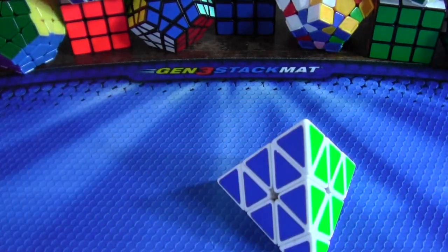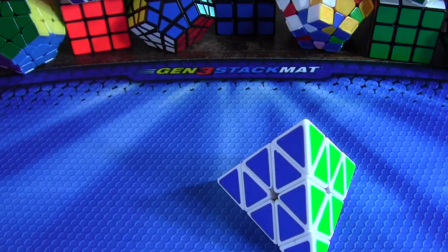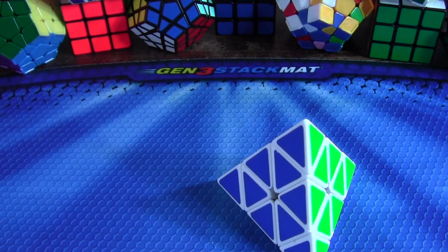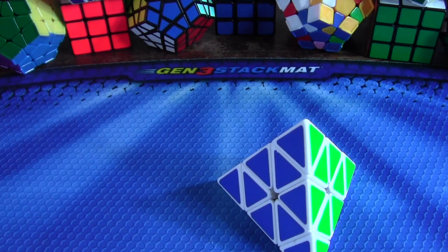So anyway, that was the slowest solve. So this was part one of 100 for Pyraminx walkthrough solves. That was a 2.55 second average, I believe.